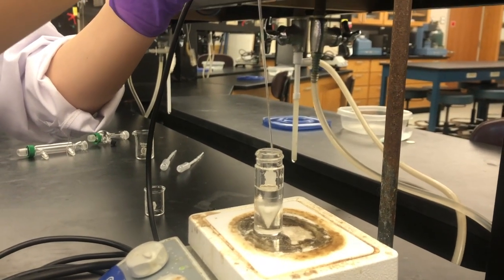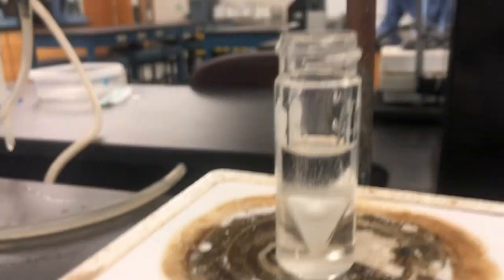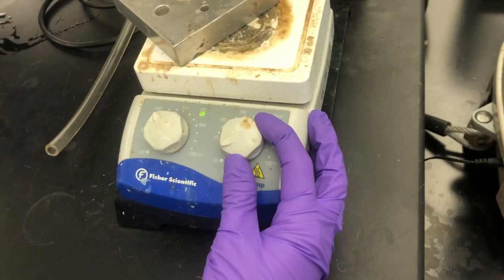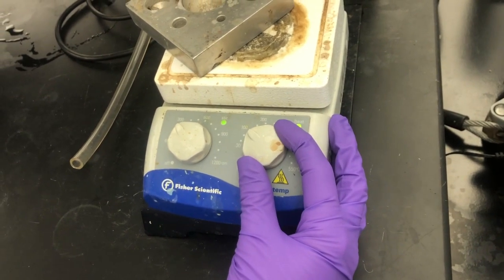Place a conical vial onto a hotplate and activate the stir feature. Add a stir bar. Place an aluminum block on the surface of the hotplate and set the temperature to 120 degrees Celsius.